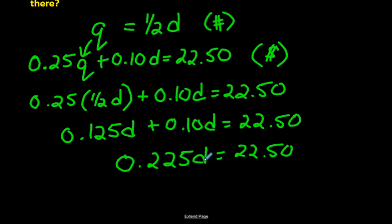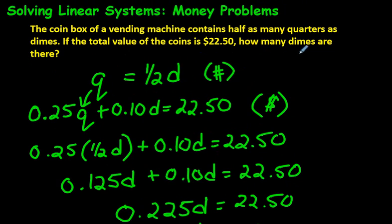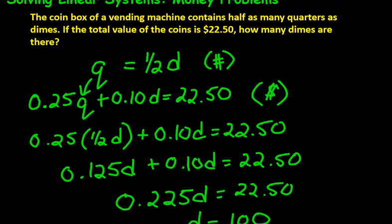In order to get D all by itself from algebra, we've learned that you just have to divide both sides by 0.225. And when you do that, if you divide both sides by 0.225, or 22.50 divided by 0.225, you will get 100. Now what does that mean, D equals 100? That means there were 100 dimes. And that's actually the answer we were looking for. How many dimes are there?